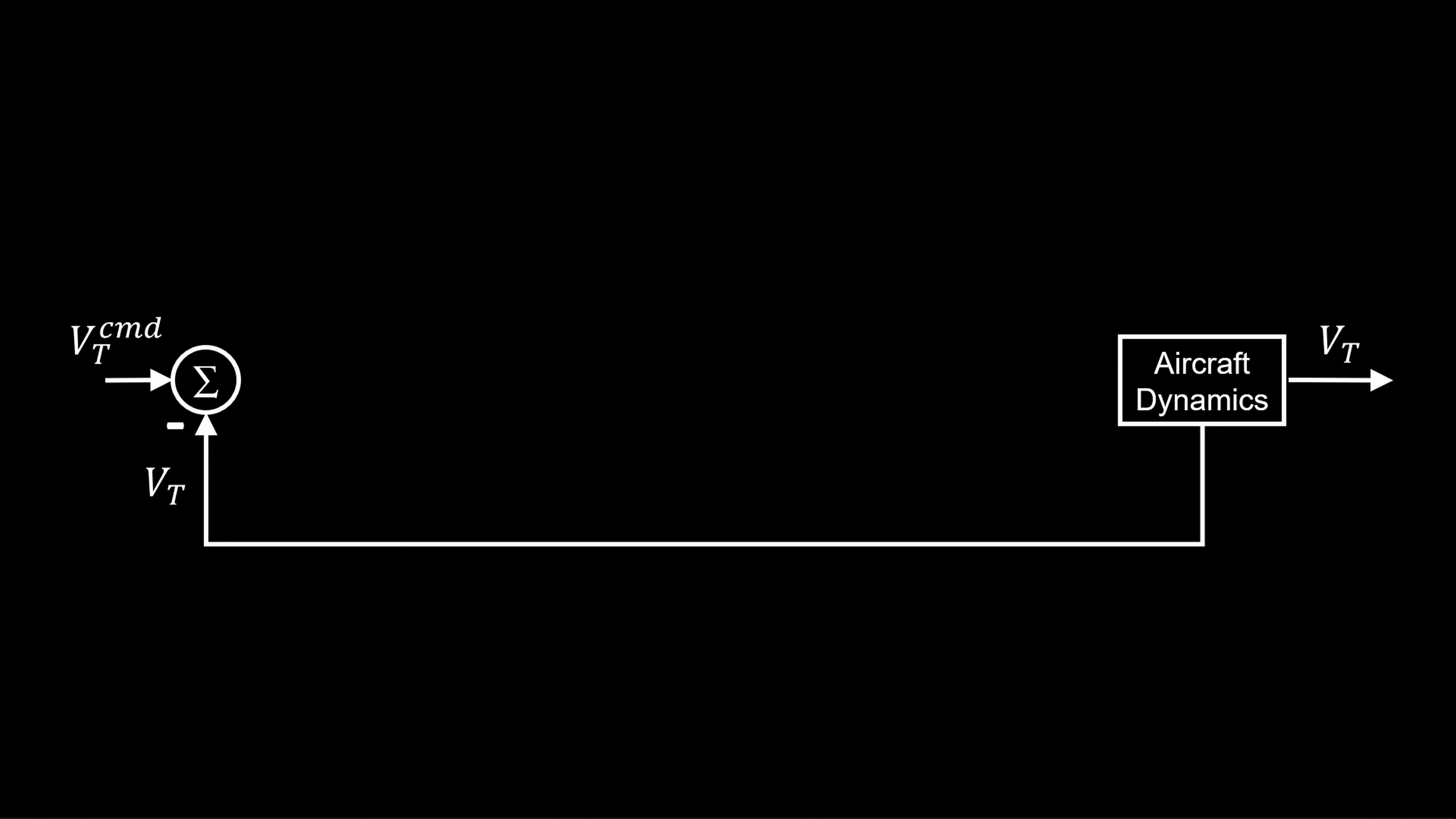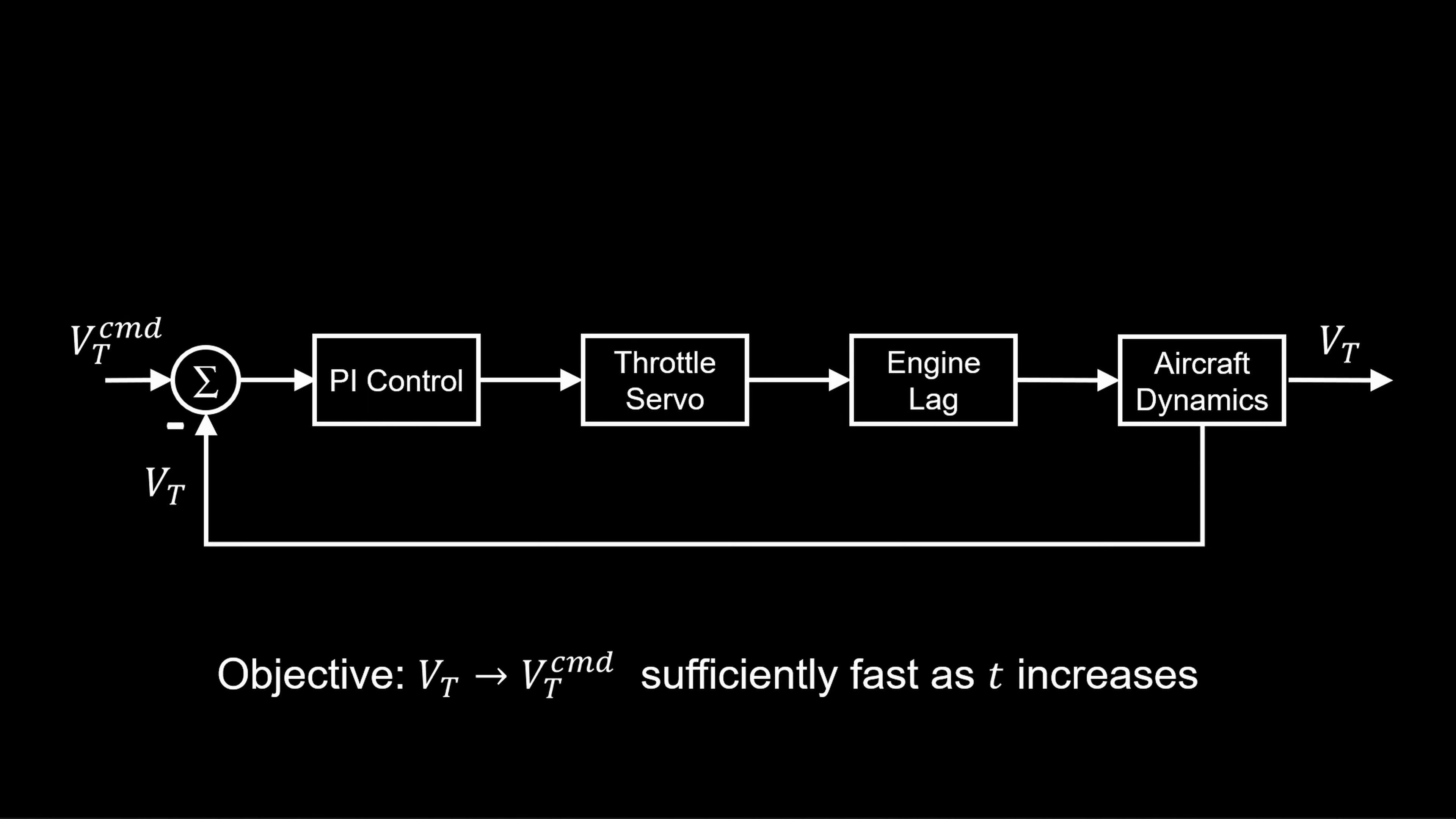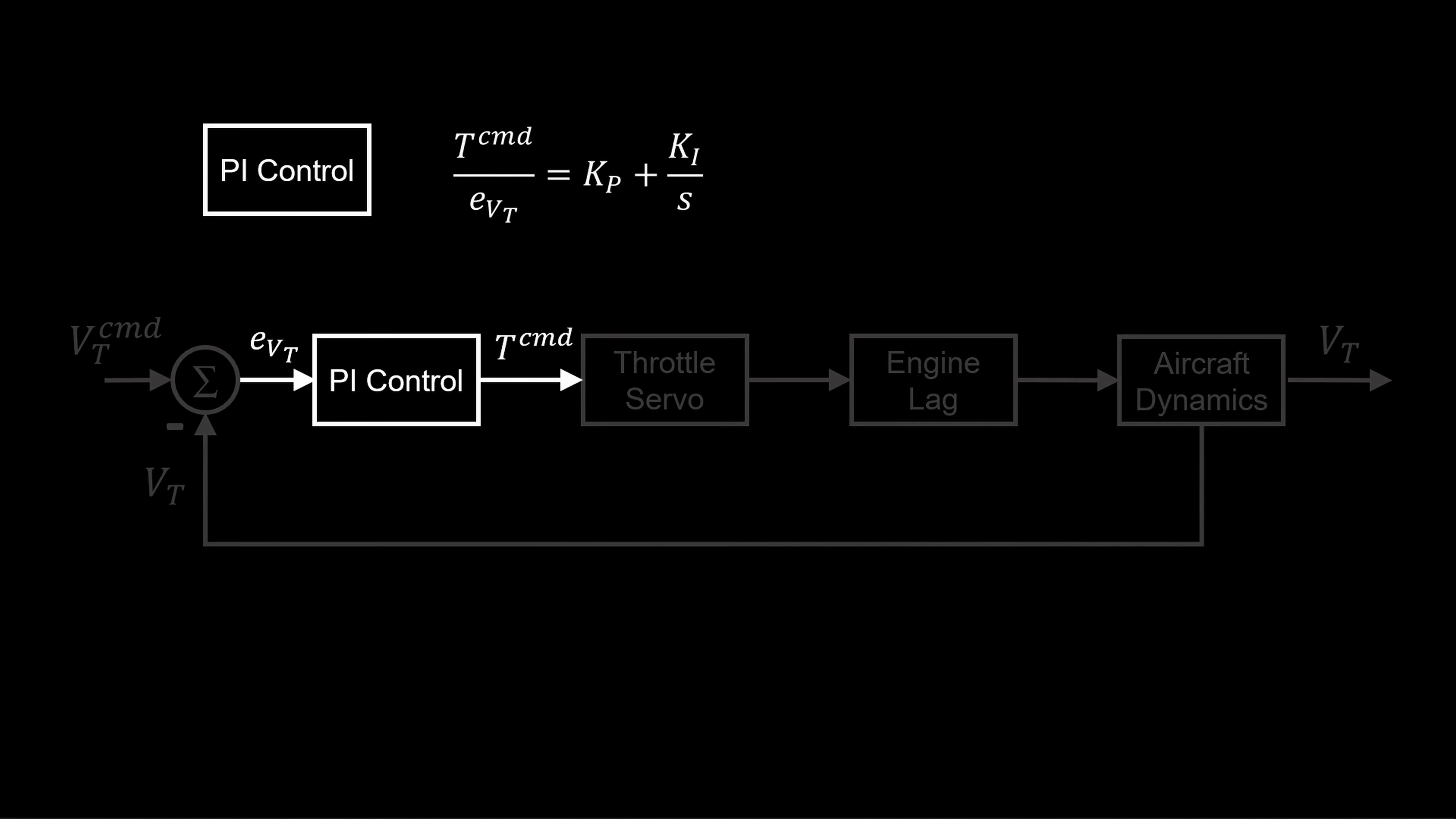The architecture is comprised of a PI controller that changes the throttle. The throttle changes the engine thrust. And the engine thrust changes the airspeed. Our objective is airspeed tracking or airspeed tracking the commanded airspeed with sufficient performance and also robustness. Let's examine each component.